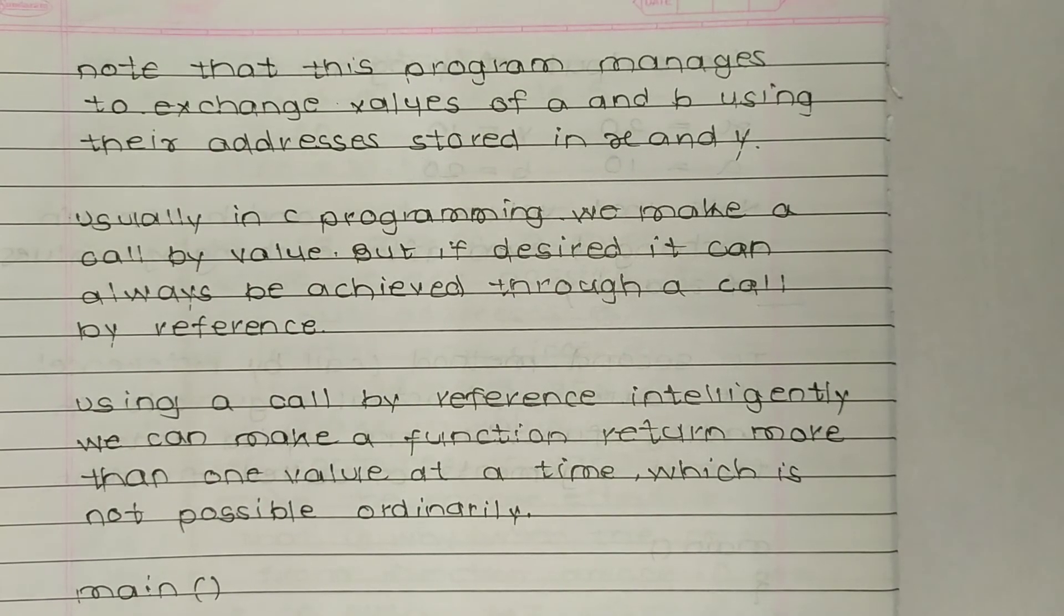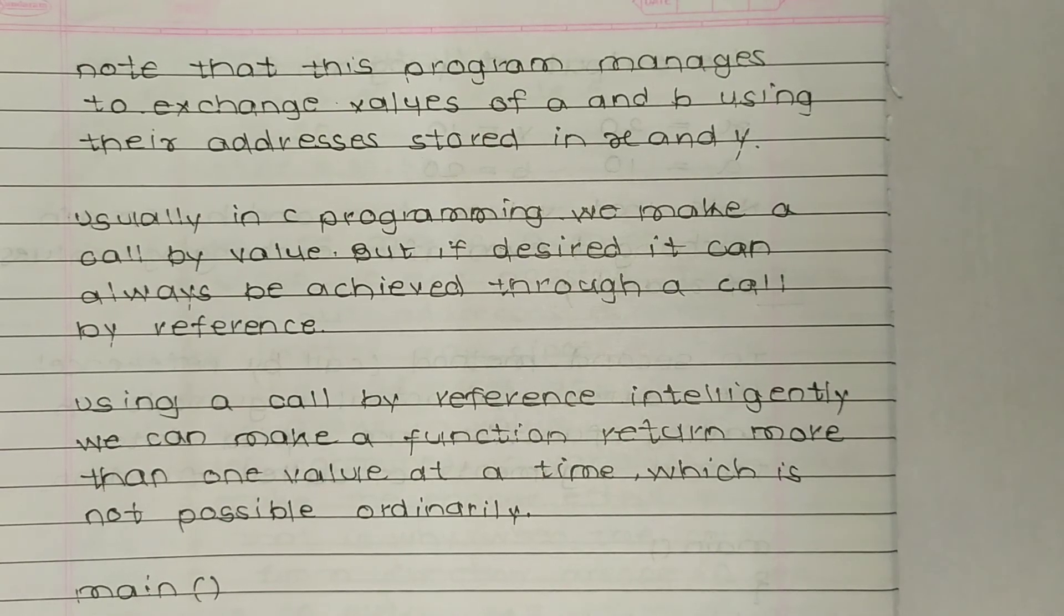Using call by reference intelligently, we can make a function return more than one value at a time, which is not possible ordinarily. So using call by reference, we are able to return more than one value.